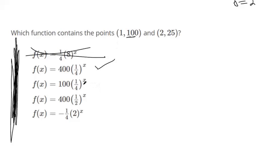If you plug in 1 in here, 1 fourth to the first is 1 fourth. 1 fourth times 100 is 25. That doesn't match up, so this is out. If we plug in 1 here, we expect to get out 100. But if you do, you get out 200. So that's not right.